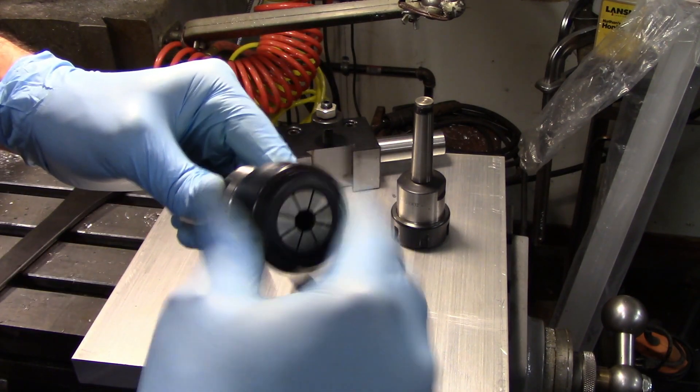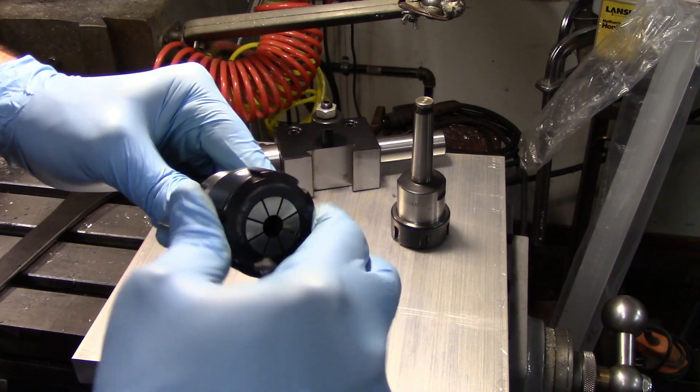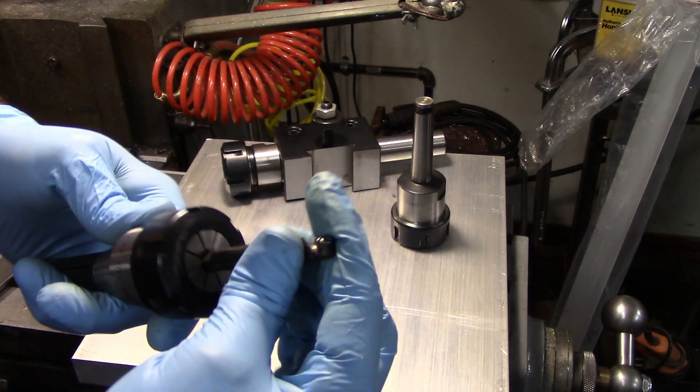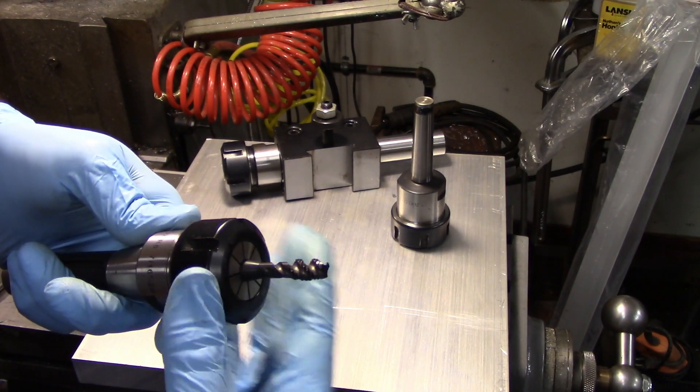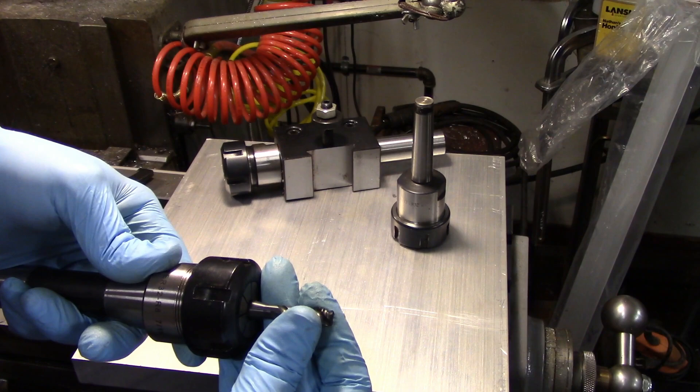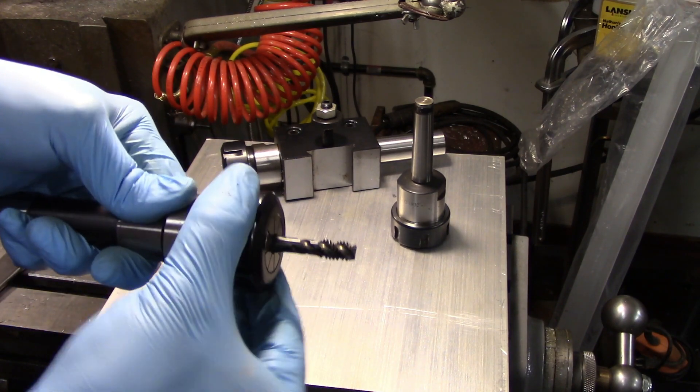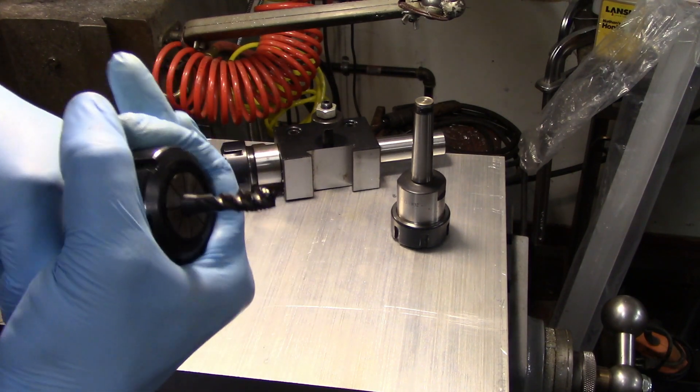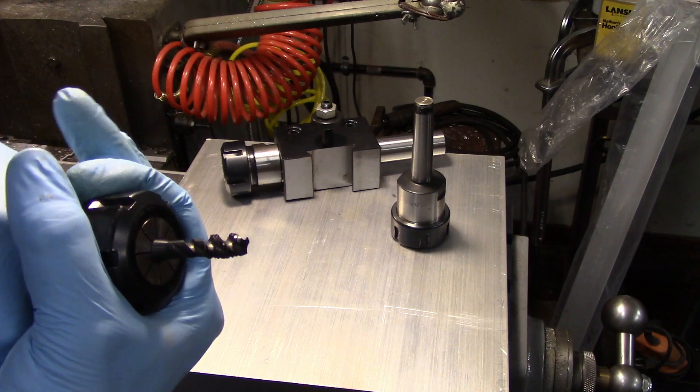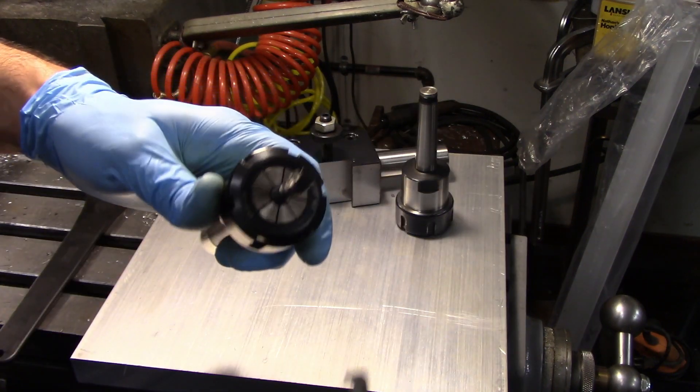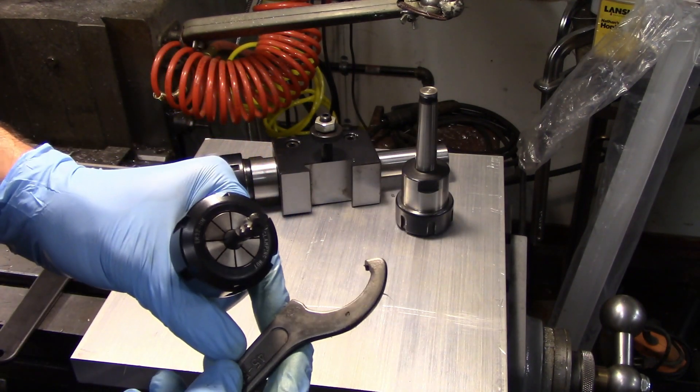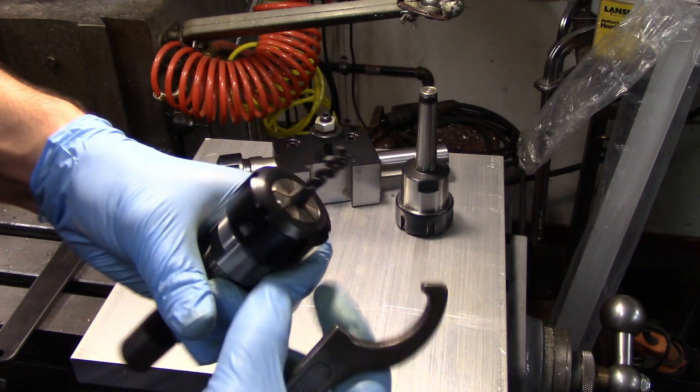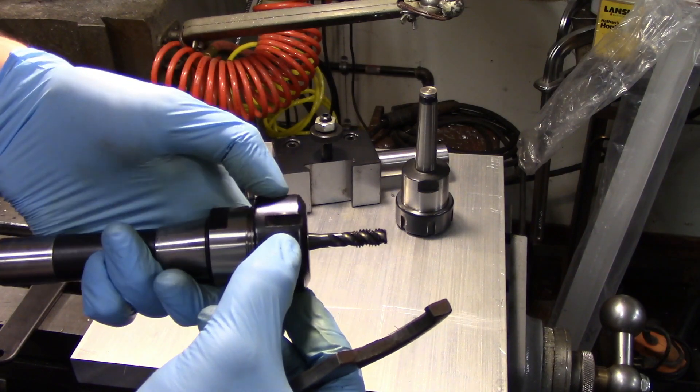Once you get these together, then you can actually start squeezing down the collet pretty easily and you put your part in there, you can see it's quite loose. Get that squeezed down by hand first and you can see it's actually holding pretty well. Whenever you buy one of these chucks, it comes with a little spanner wrench like this and they're very serviceable, but I find that in use it tends to kind of ding up the corners of these slots here.